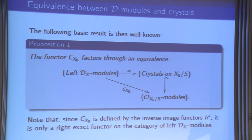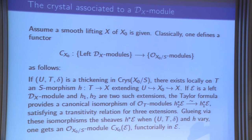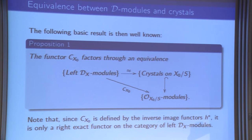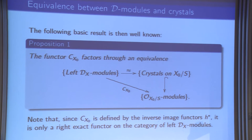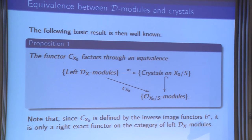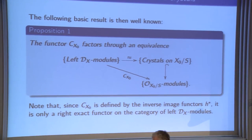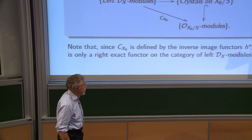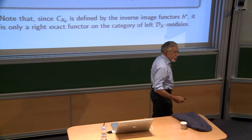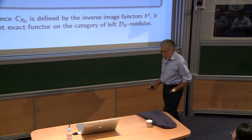However, C_{X_0} is not an exact functor, even though you begin with an equivalence of categories, which means the inclusion of crystals into O_{X_0/S}-modules is not exact. This is because C_{X_0} is defined by pulling back by local functors h^*, which are tensor products and not flat in general. The category of crystals is an abelian category because it is equivalent to left D_X-modules, but the kernel is not the same: the kernel of p is not a crystal — it's a sheaf — and this does not commute with the C_{X_0} functor.